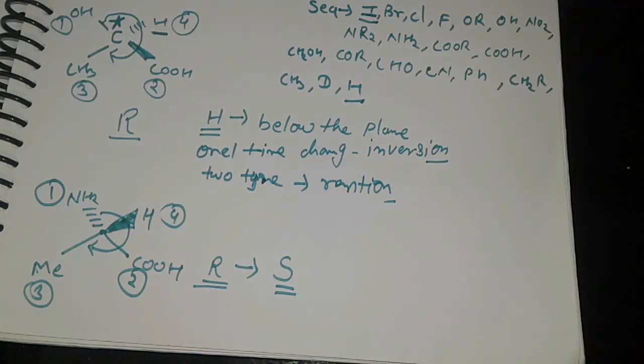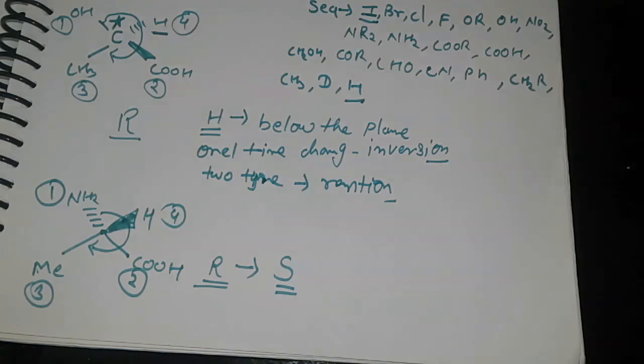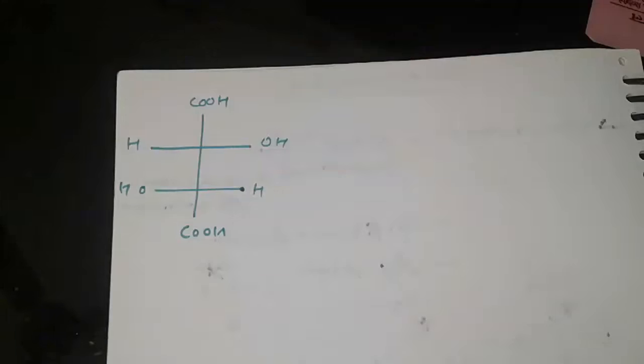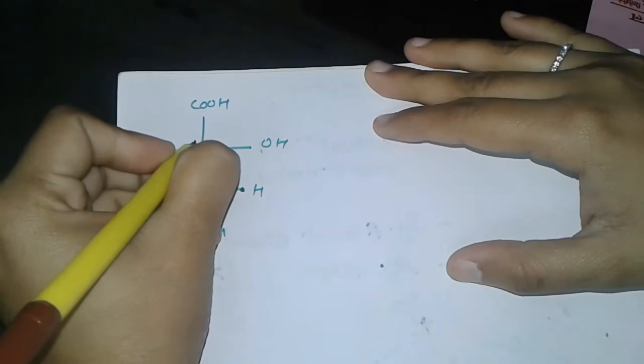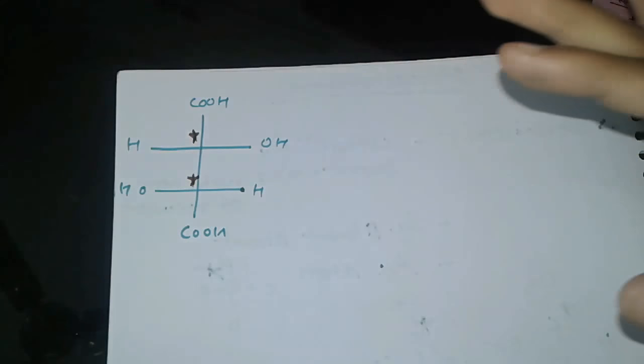If the second type of representation, Fischer representation, is given, then the rule changes. This is Fischer projection where the chiral carbon is present.